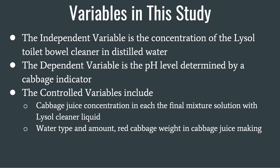The variables in this study are as follows. The independent variable is the concentration of the Lysol Toilet Bowl Cleaner in distilled water. The dependent variable is the pH level determined by the cabbage indicator. The controlled variables include the cabbage juice concentration in each of the final mixture solutions with Lysol Cleaner liquid, as well as the water type and amount, red cabbage weight, and cabbage juice making.